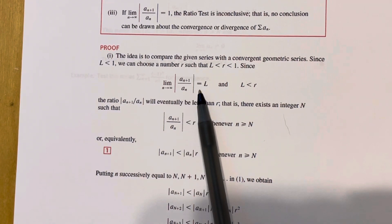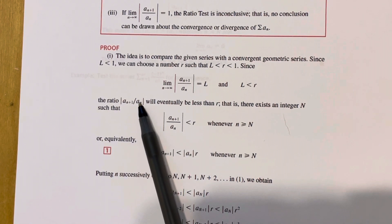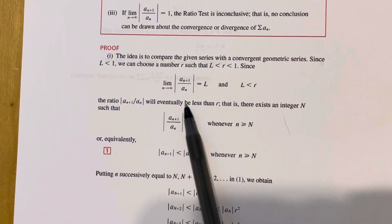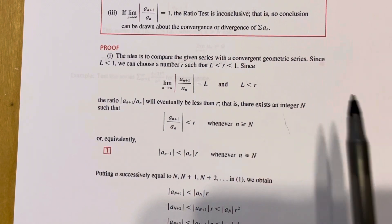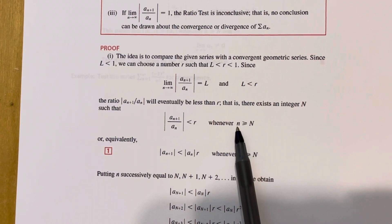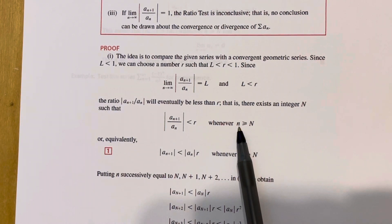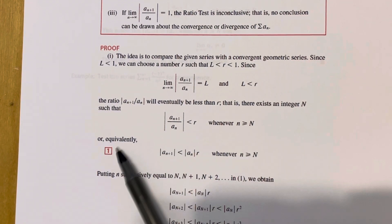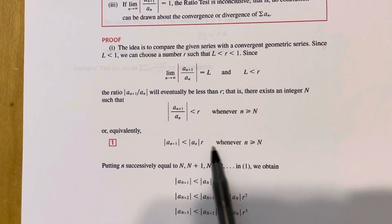That would imply that our limit L is less than r. And what that means is: if I go far enough out in my sequence — if n is large enough — then the absolute value of the ratio will eventually be less than r, because that's how limits work. So there exists some positive integer N such that whenever n ≥ N, we get |a_{n+1} / a_n| < r. I can multiply both sides by |a_n| to get |a_{n+1}| < |a_n| · r, whenever n is big enough.